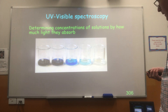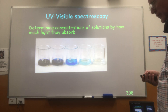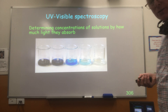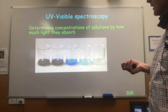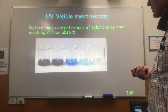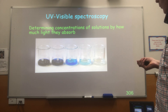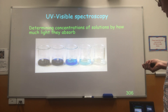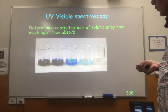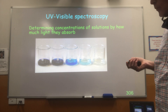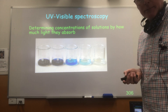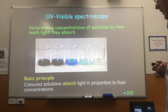The basic technique is measuring how much light gets absorbed by the solution. Just intuitively, the intensity of the colour of a solution gives you a good indication of how concentrated it is. Going from left to right, we've got decreasing concentrations of copper sulphate solution. The clear solution on the right has all of the light being transmitted through it — none is being absorbed. As we move to the left, more and more light gets absorbed. That's the basic principle: coloured solutions absorb light in proportion to their concentration.